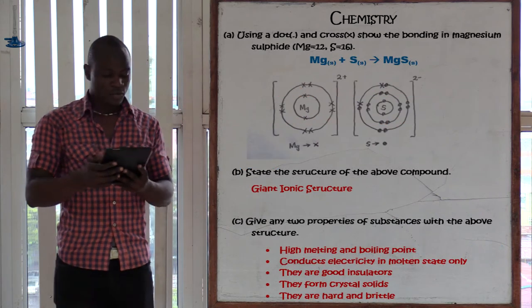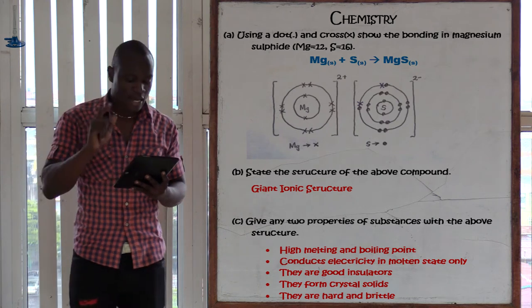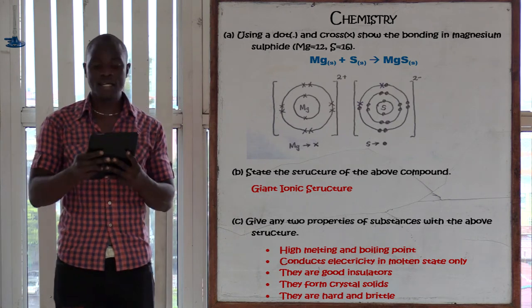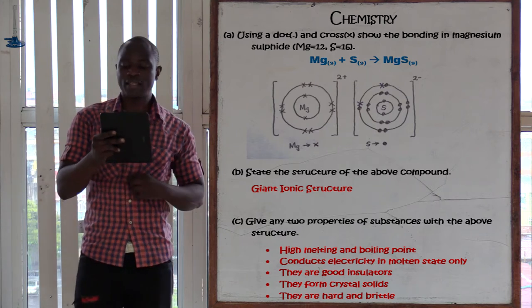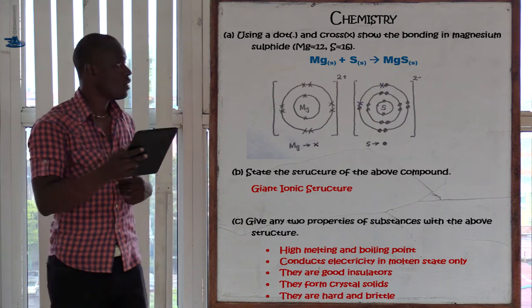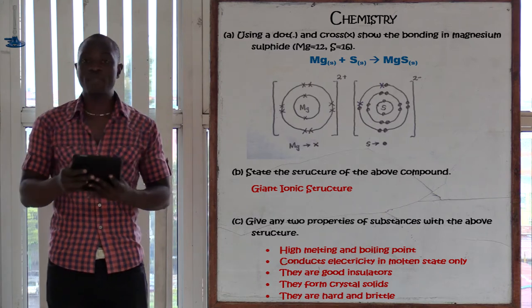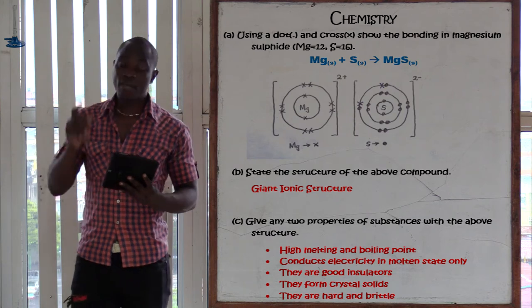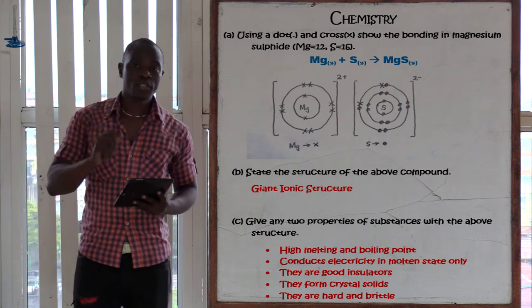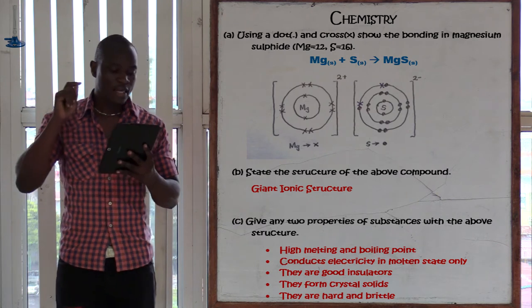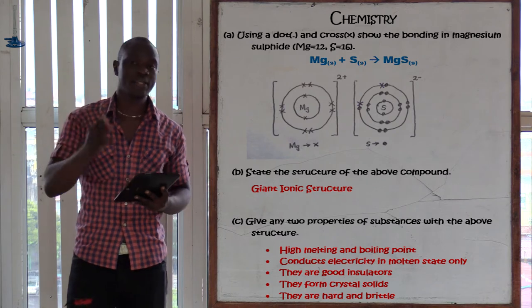Question 16 asks us to use dots and crosses to represent the outermost electrons of magnesium sulfide, showing the bonding in the compound.